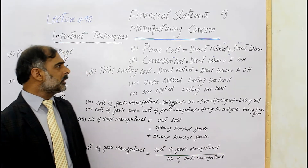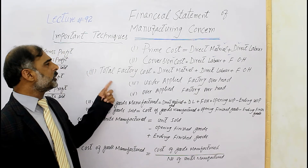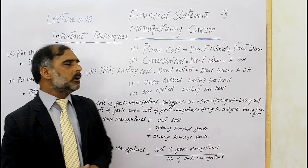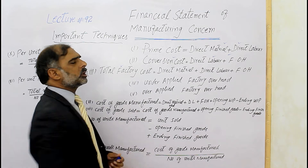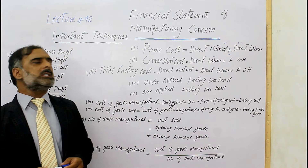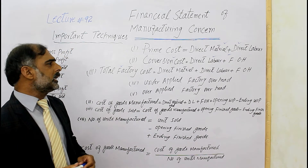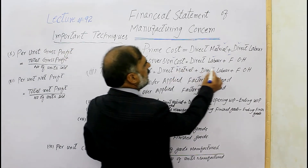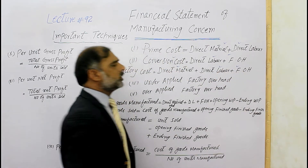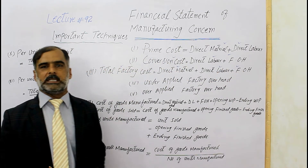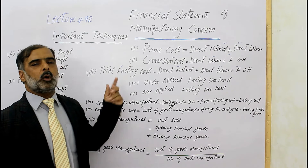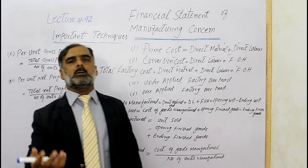We have a total factory cost. To calculate the total cost, we include direct material cost, direct labor cost, and factory overhead cost. These three components together give us the total factory cost.